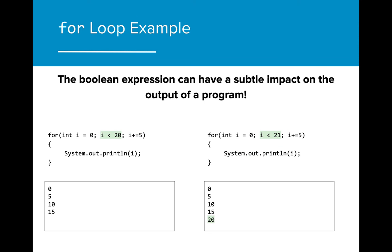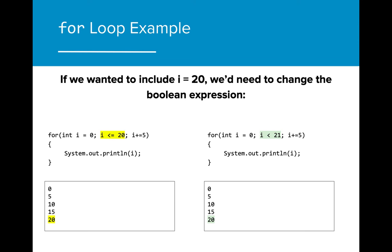It's important to note that the increment, Boolean expression, and loop control variable all can have a subtle impact on our programs. In this case, the difference between writing i is less than 20 and i is less than 21 is the difference between including another value printed in the console. We need to pay close attention to Boolean expressions so that we are iterating through the for loop the correct number of times. If we want to include the value of 20, for example, we would need to write the program as i is less than or equal to 20, or as i is less than 21, so as to include the value of i when i equals 20.